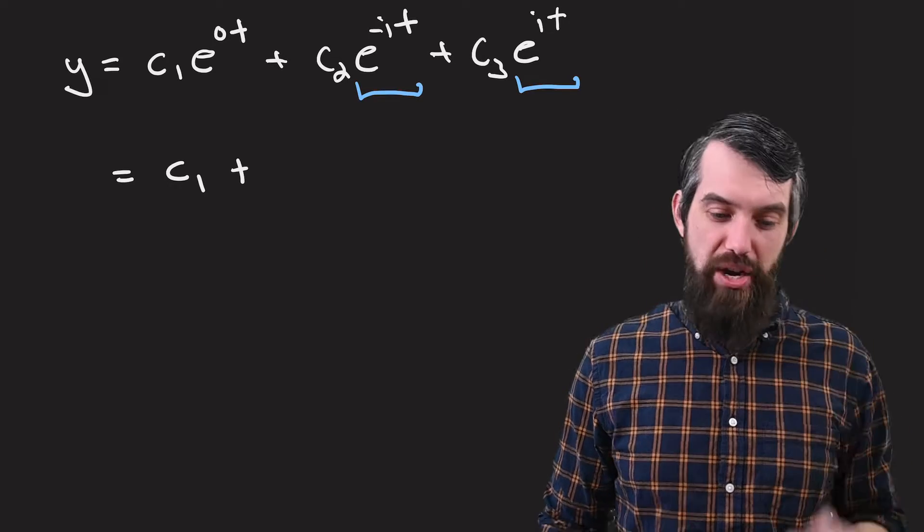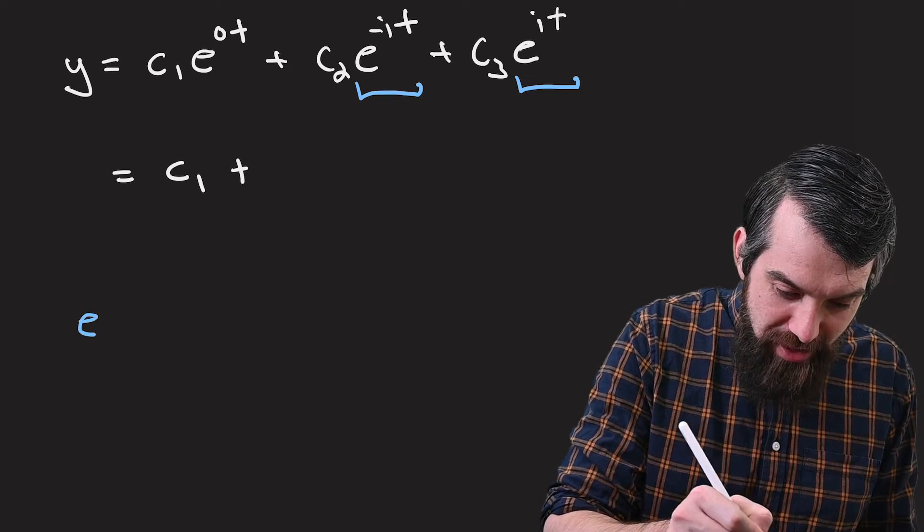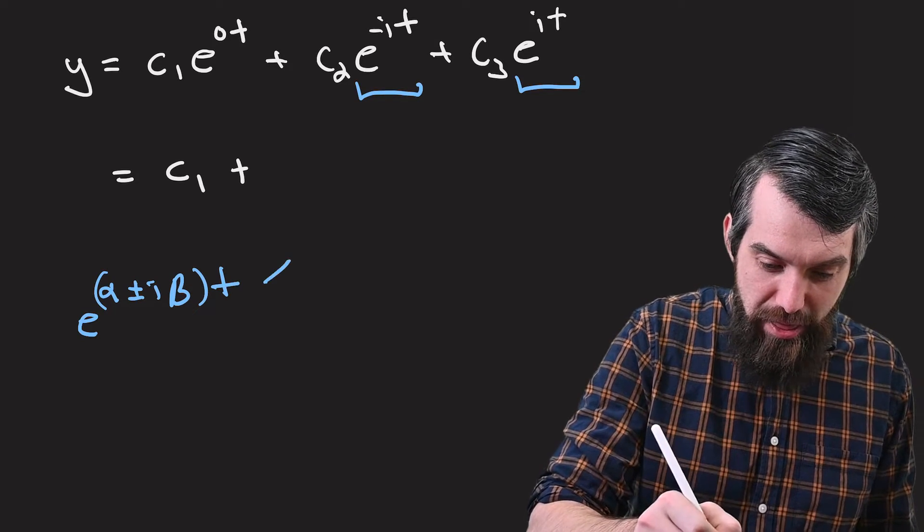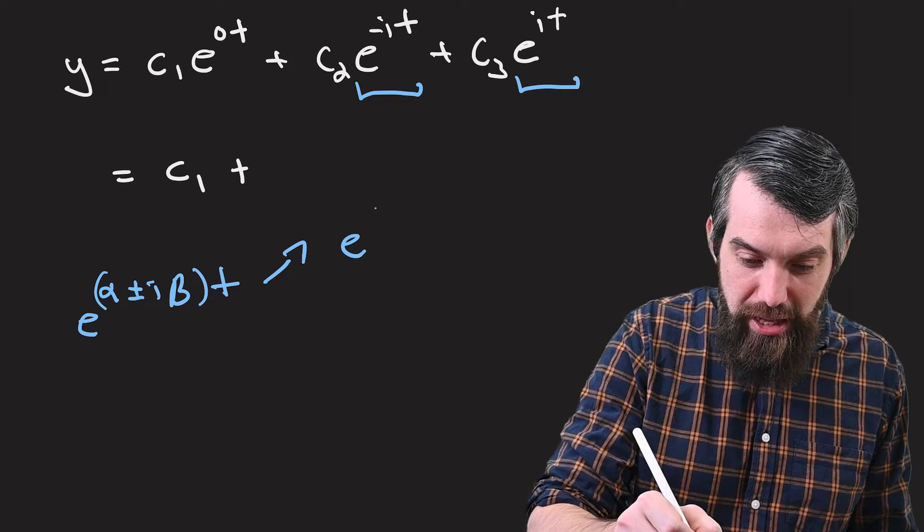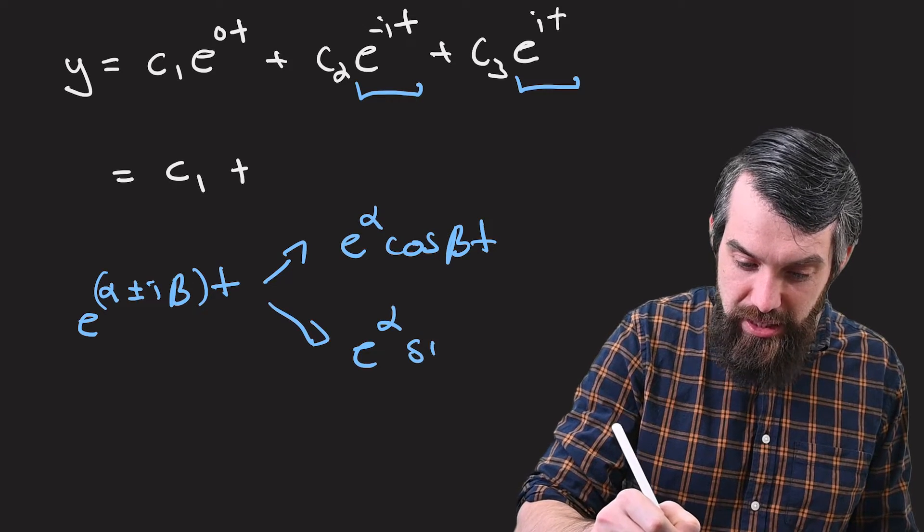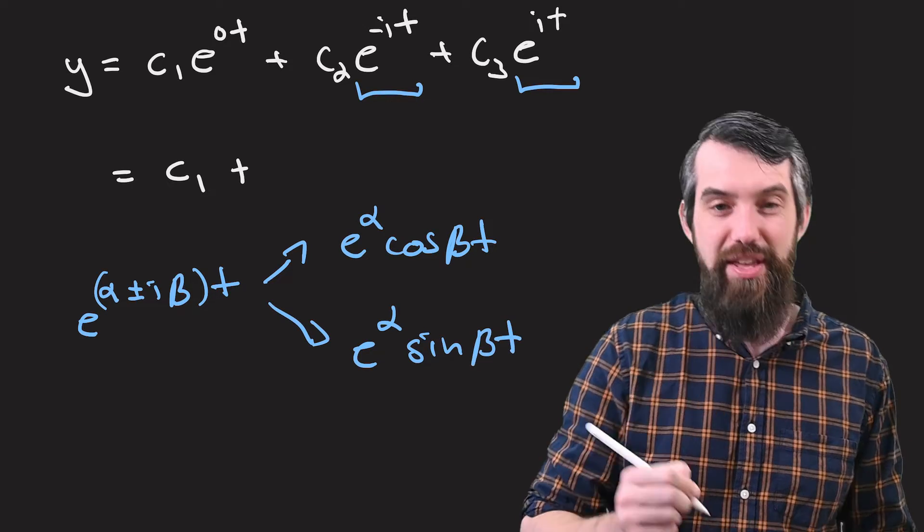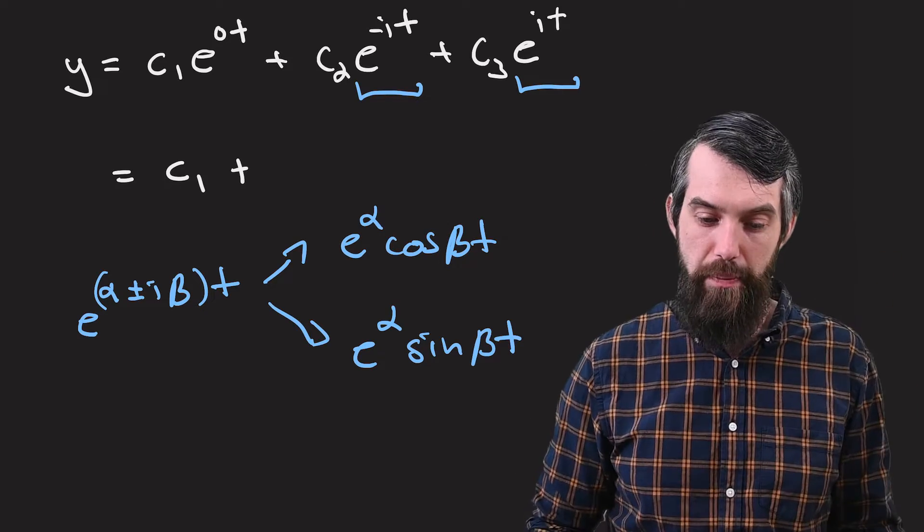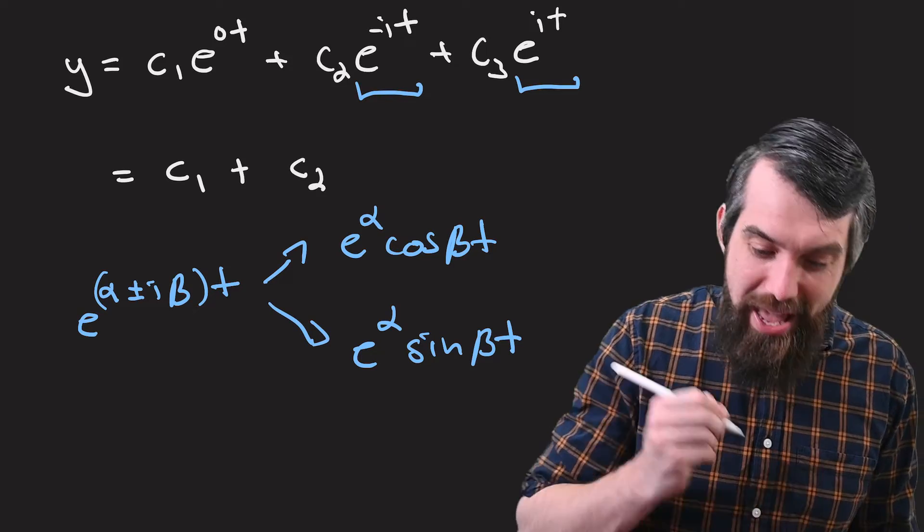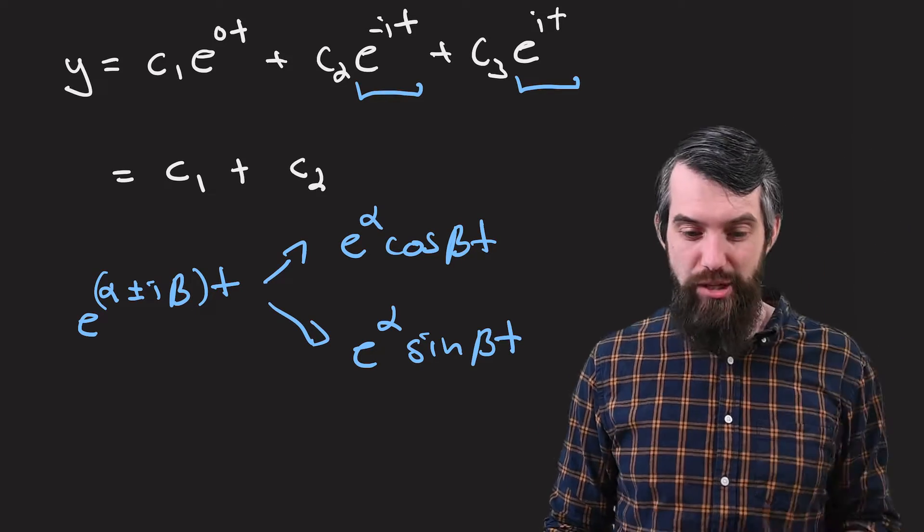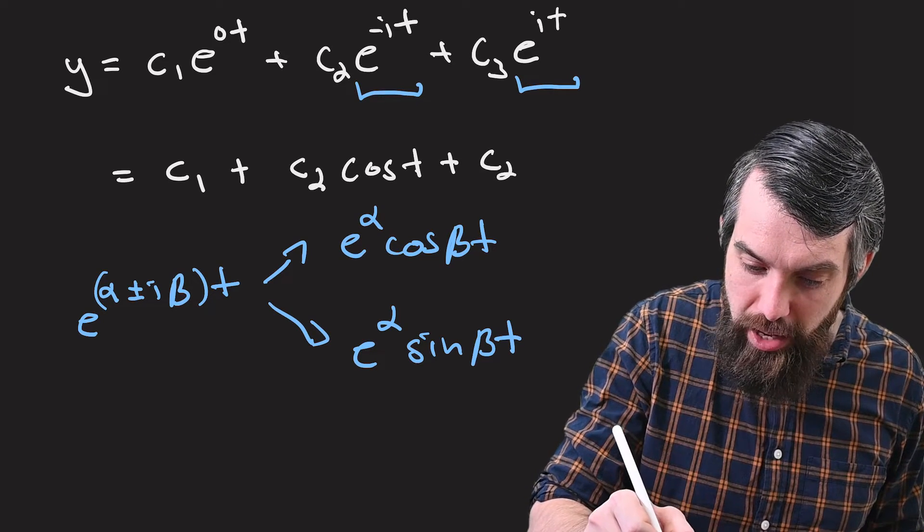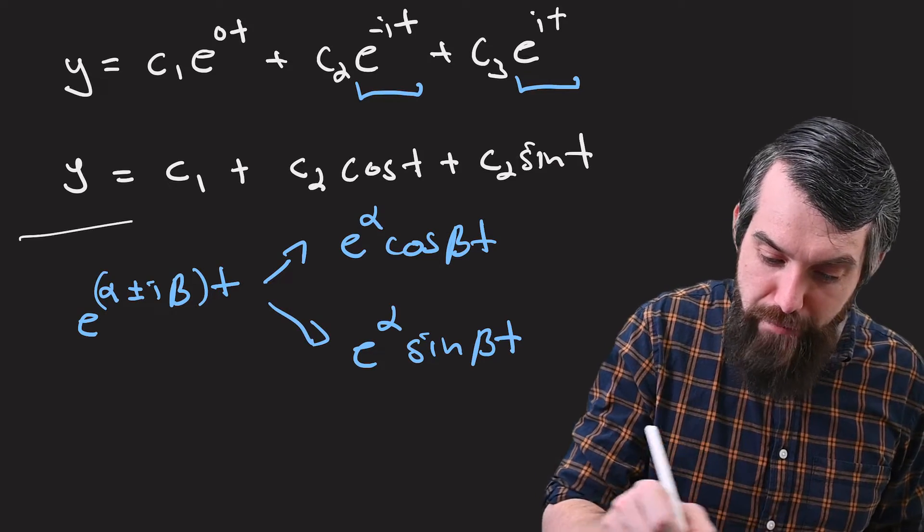The standard trick, exactly as we did when we were talking about the second order case, is that if you have e to the alpha plus or minus i beta times t, that would be the general case, then your two different solutions are e to the alpha cosine of beta t and e to the alpha sine of beta t. So for our example, I'm just going to say c2, well my alpha is 0, there's no real component, and my beta is 1. So it's c2 times cosine of t plus c3 sine of t. And that is my final answer.